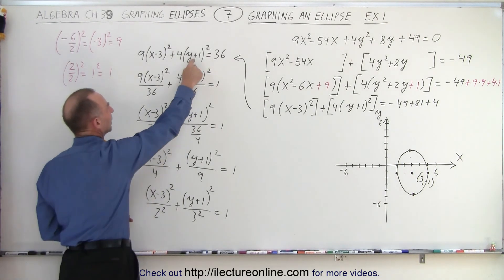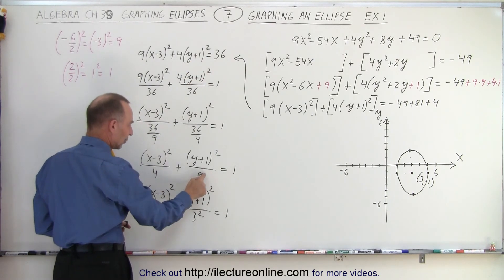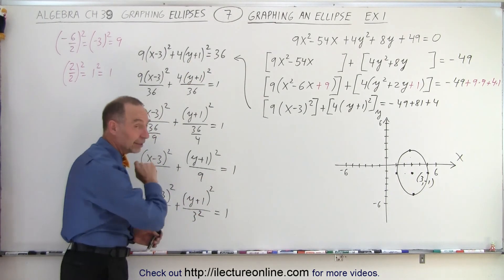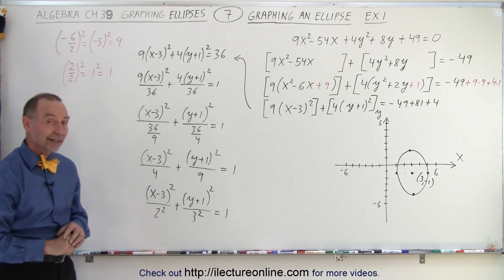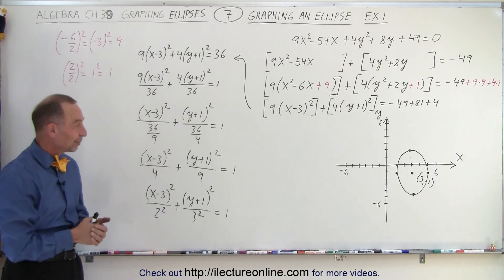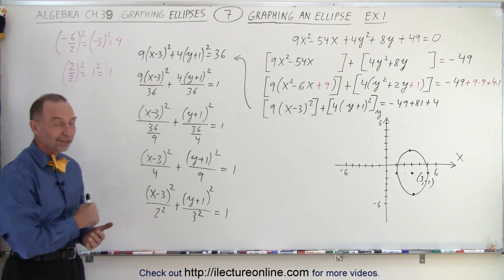And notice how easy it is in algebra to make mistakes. I made one over here by not carrying the plus, and I made one here by not turning 9 into a 3 squared. So not paying attention in algebra can be very costly. And there's a couple examples of what to be careful for. So that is how it's done.